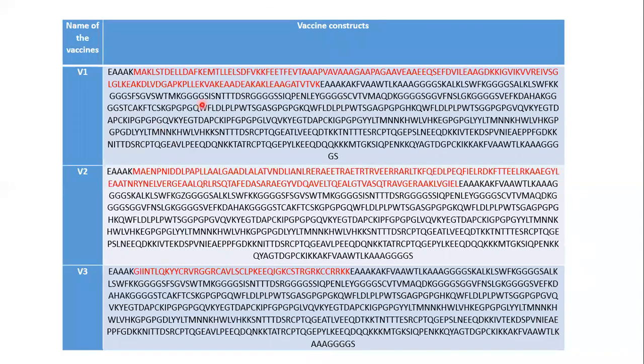Here you can see the amino acid sequence of the three vaccine constructs. And the three vaccine constructs differ from each other only in their adjuvant sequences. They are depicted in the red color. Here, the first vaccine, V1, contains the HBHA protein as its adjuvant.